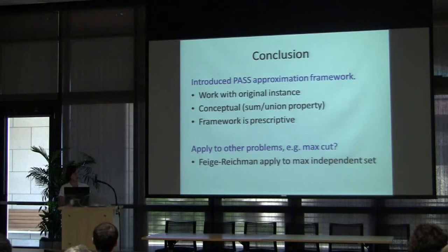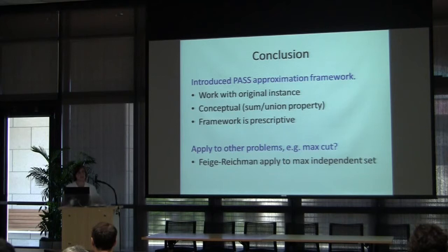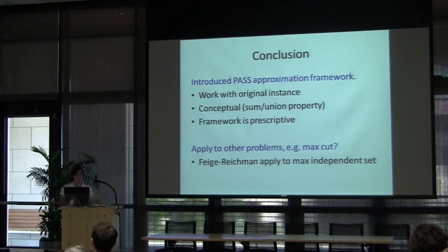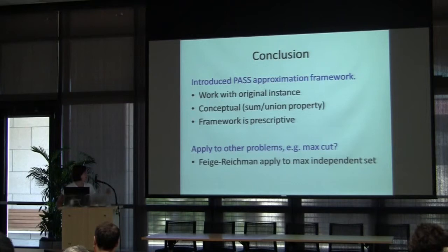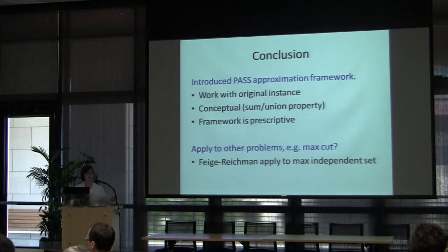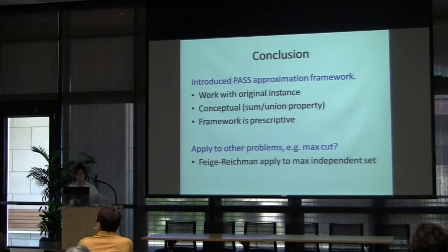In conclusion, the PASS approximation framework works with the original instance and gives guarantees as a function of the solution's properties. It is conceptual in that the guarantee on the union of two instances is the sum of the individual guarantees. Most excitingly, it is prescriptive: it helped select between two greedy algorithms and guided the design of an LP-based algorithm with formal guarantees. Open problems include applying this framework to other settings such as max cut, as Feige and Reichman have already done for max independent set.